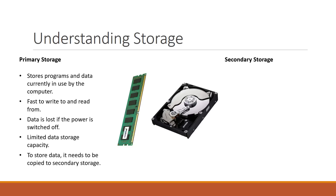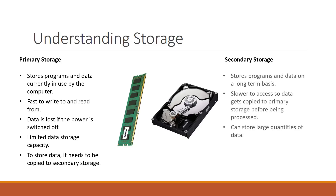Finally, primary memory and human short-term memory can hold a finite amount of information, and to save it for later, it needs to be moved to secondary storage or long-term memory. Secondary storage also shares characteristics with a human's long-term memory. It stores information on a long-term basis, but it is slower to access than primary memory or short-term memory, and it can also store vast quantities of data.